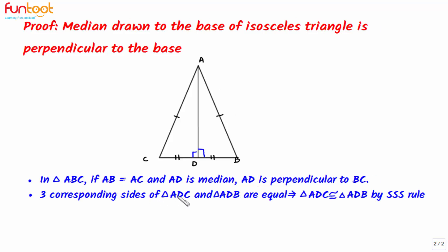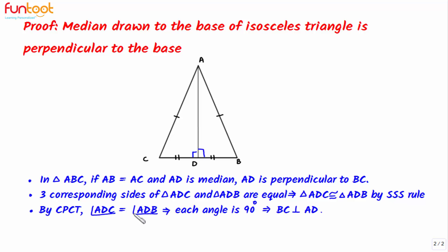Three corresponding sides of triangle ADC and triangle ADB are equal, which implies triangle ADC is congruent to triangle ADB by the SSS rule. By CPCT, angle ADC equals angle ADB, which implies each angle is 90 degrees, and therefore BC is perpendicular to AD.